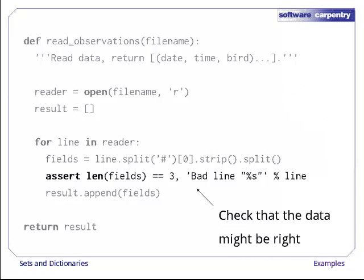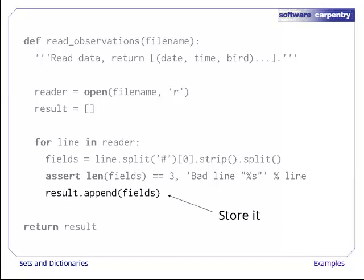To prevent trouble later on, we check that there actually are three fields before going on. An industrial-strength version of this function would also check that the date and time were properly formatted, but we'll skip that for now. Once we're done our check, we append the triple containing the date, time, and bird name to the list we're going to return.